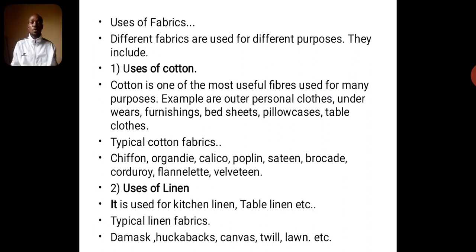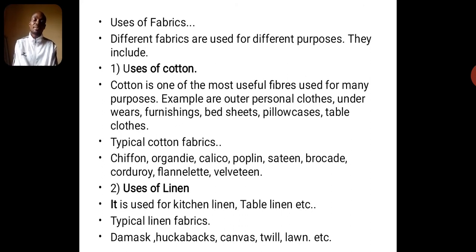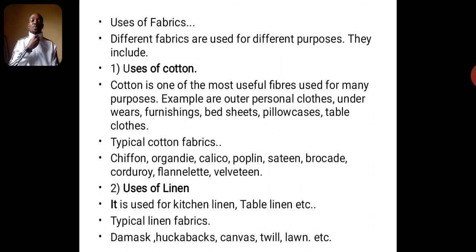Labels can be seen on virtually all clothes we buy in the market. When you buy clothes, you may see '100% cotton', '70% polyester', '50% nylon', or '100% linen'. Reading these labels is another way of identifying fabrics and fibers.